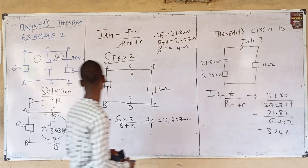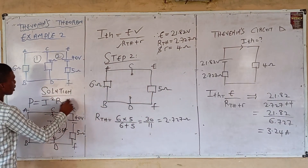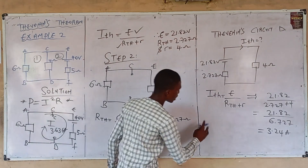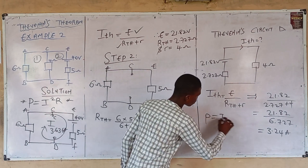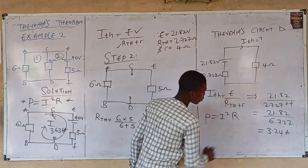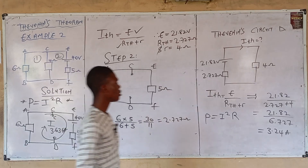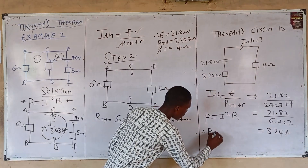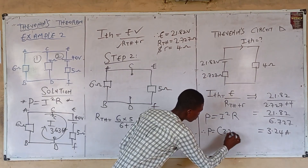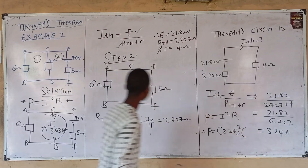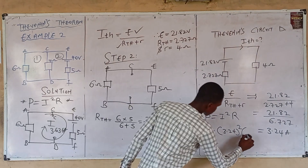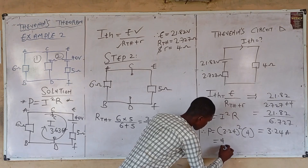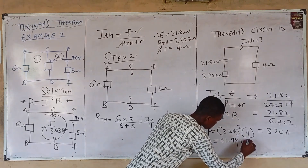The question asks for power, not current. We stated earlier that power equals I squared R. The value of I calculated using Thévenin's theorem is 3.24 A. Therefore, power = (3.24)² × 4 = 41.99 watts.